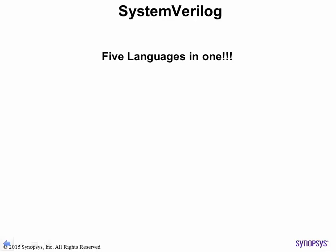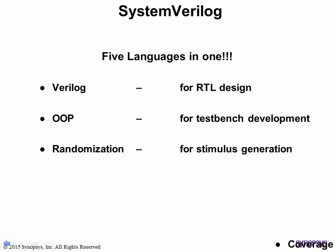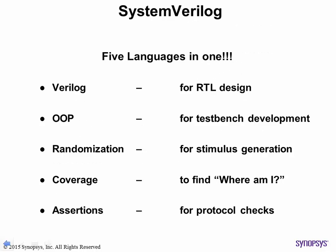It all starts with the System Verilog language, which is an amalgam of five different languages. The first is the well-known Verilog HDL. Next is object-oriented programming, which allows for development of flexible, reusable, scalable test benches. It also allows for creation of methodology standards like VMM and UVM. With OOP, you get constrained randomization to explore the state space of your design. To check the completeness of your testing, System Verilog includes a coverage language. Finally, to check the correctness of your protocols, there are assertions.